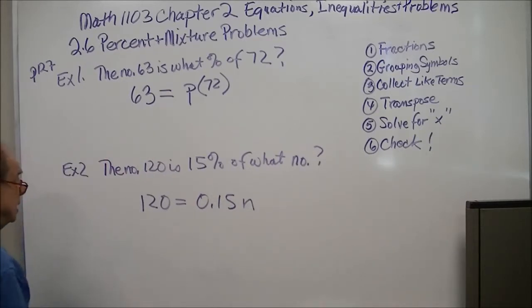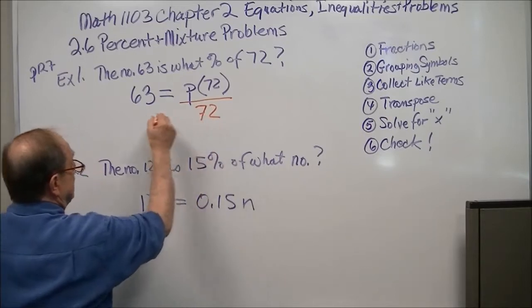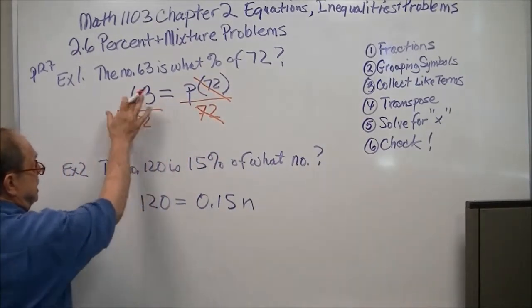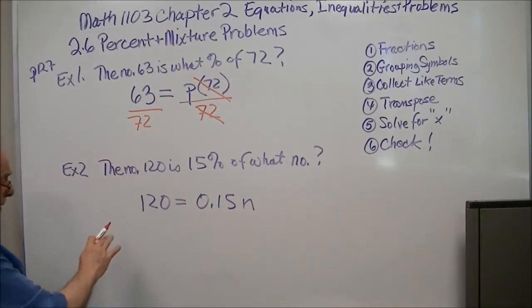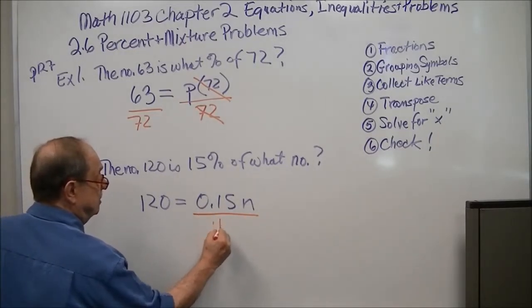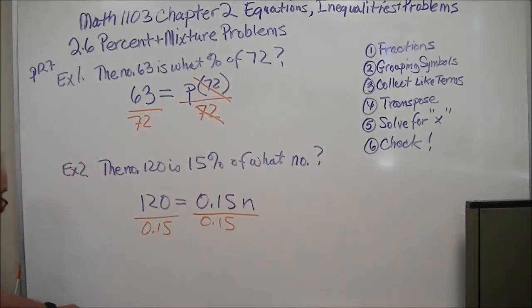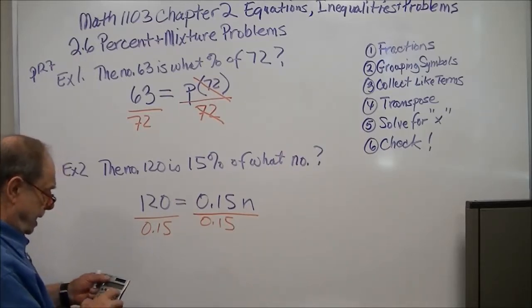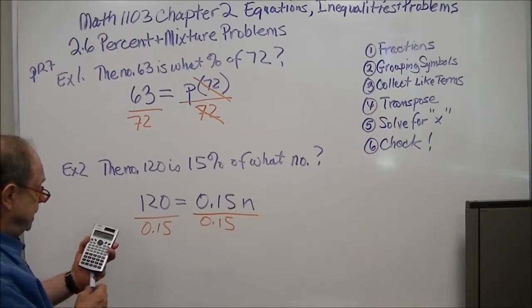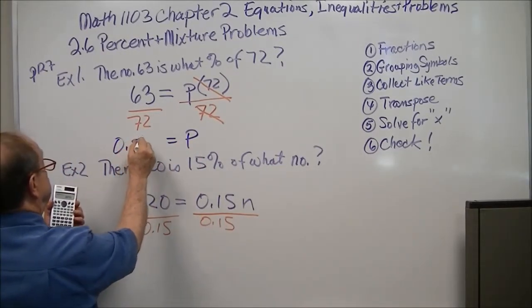So in your strategy to solve, how would you solve this first one? Well, you want to get rid of the 72. So you divide both sides by 72. The 72s will cancel out, and this is going to give you a decimal fraction. We'll get back to that shortly. Now for this one, we're going to use a calculator. We're just going to divide both sides by .15. We take our calculator and go 63 divided by 72, which gives me 0.875.